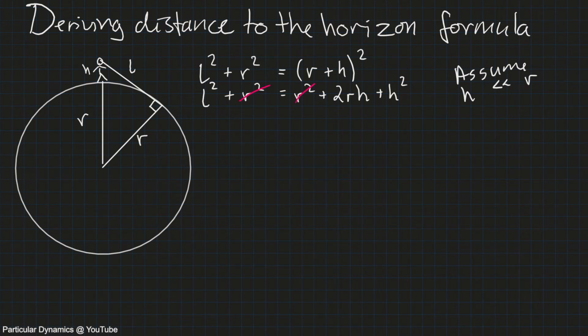And so what follows from that is that the term here rh is much larger than the term here h squared. And so we can assume that h squared is effectively zero and we can disregard it.